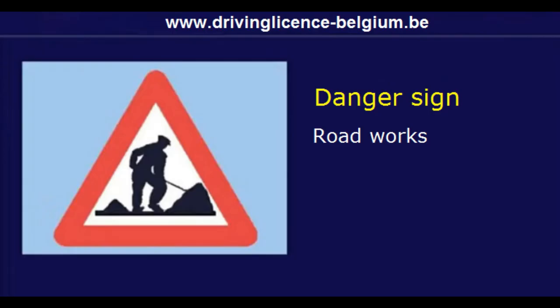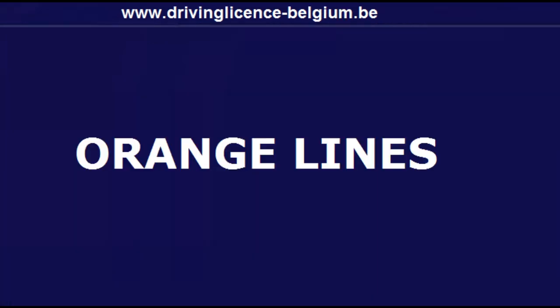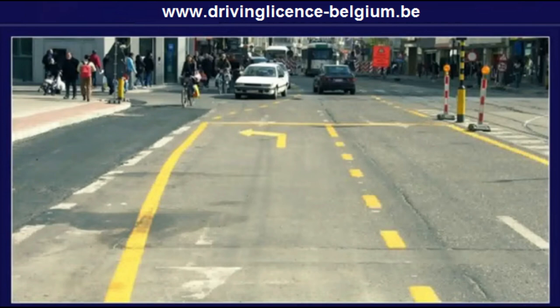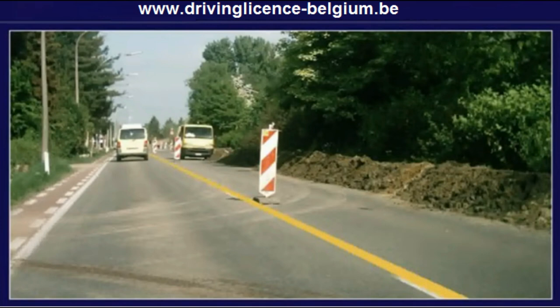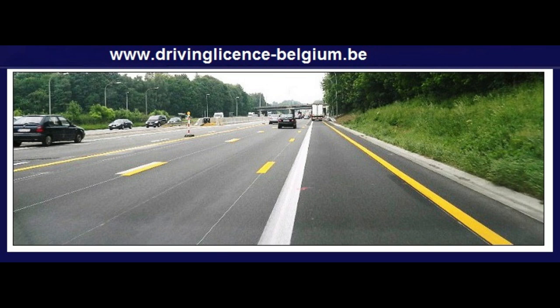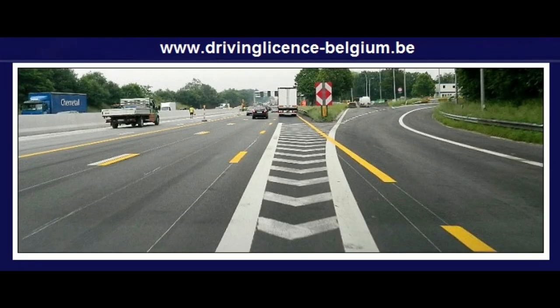Road works. This traffic sign indicates that there are road works. Orange lines: when there are road works, they usually paint temporary orange colored continuous or broken lines on the road surface. These markings have the same meaning as the white ones. When you see white and orange lines, you should only consider the temporary orange colored road markings. When the temporary orange road markings tell you to drive over the hard shoulder or over white markings, it is allowed because only the orange road markings count.